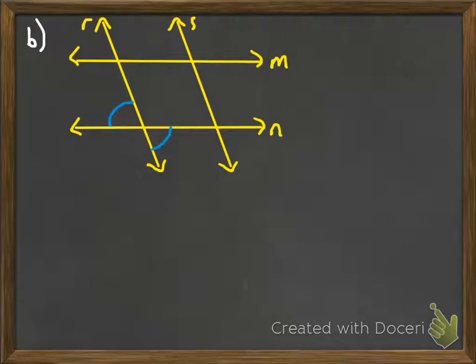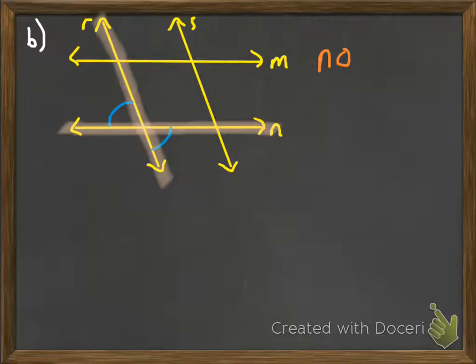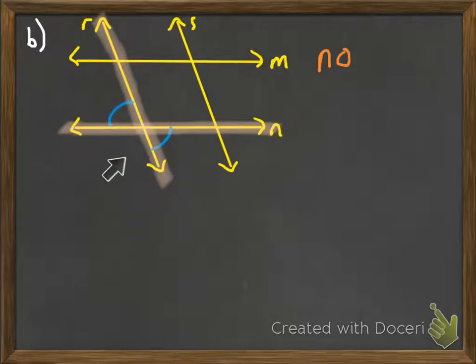In the next example, M and N are not parallel — we cannot determine if they're parallel, so the answer is no. The two congruent angles shown were formed only by line N and line R; neither angle has anything to do with line M. These are vertical angles that would be congruent whether line M existed or not. You have to use alternate interior, alternate exterior, corresponding, or consecutive interior angles to show two lines are parallel.